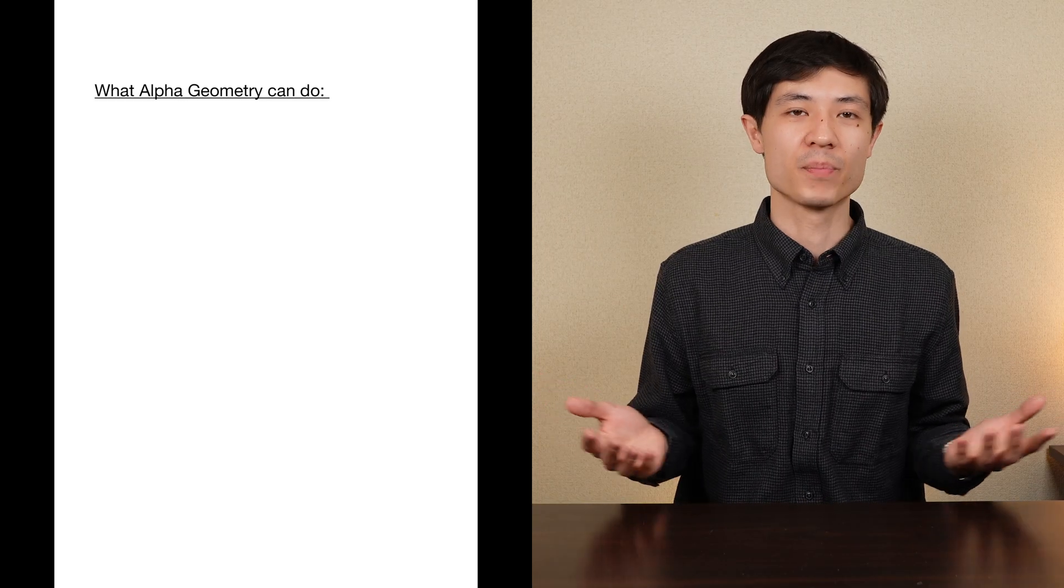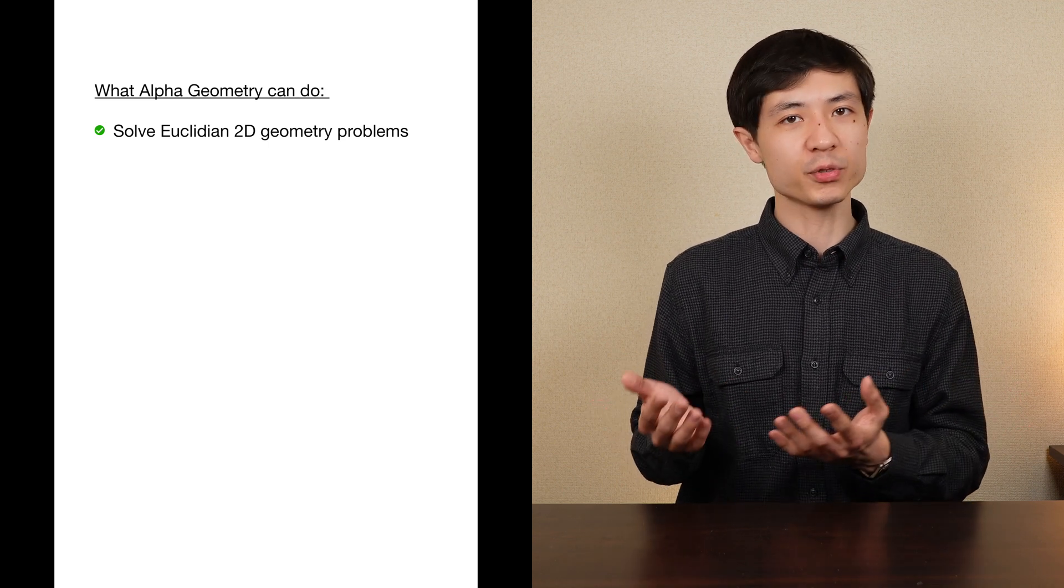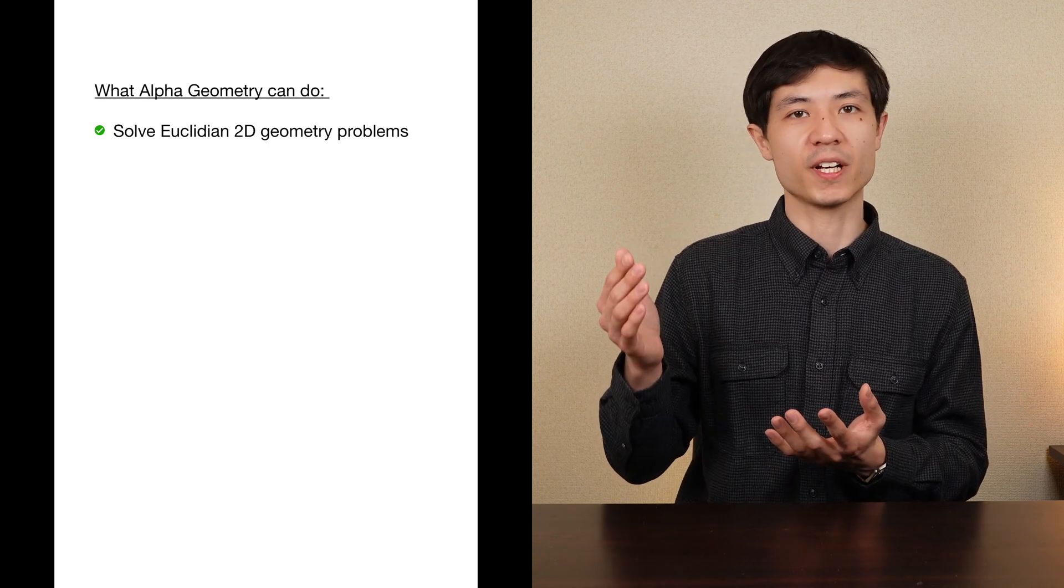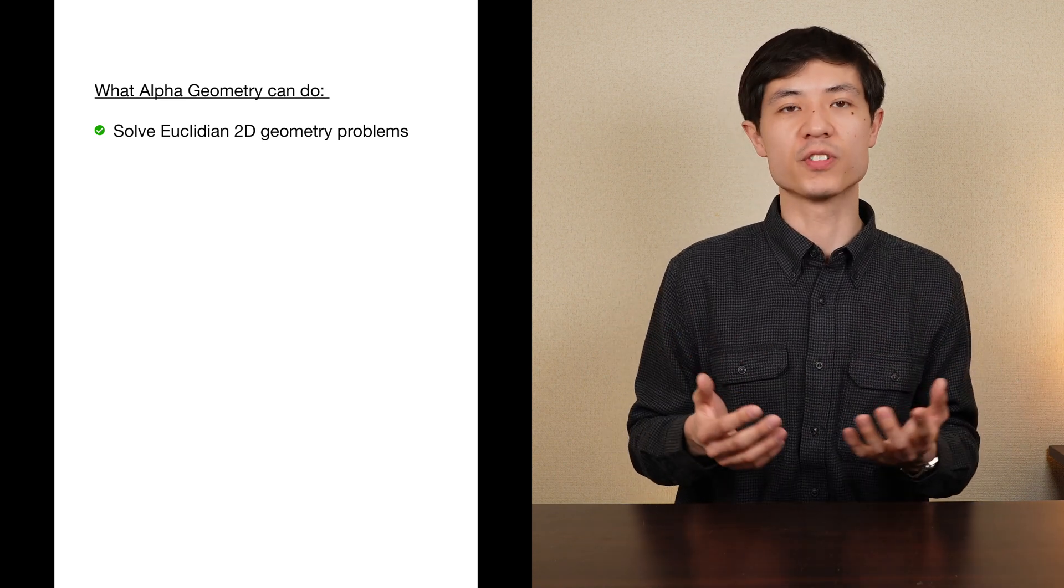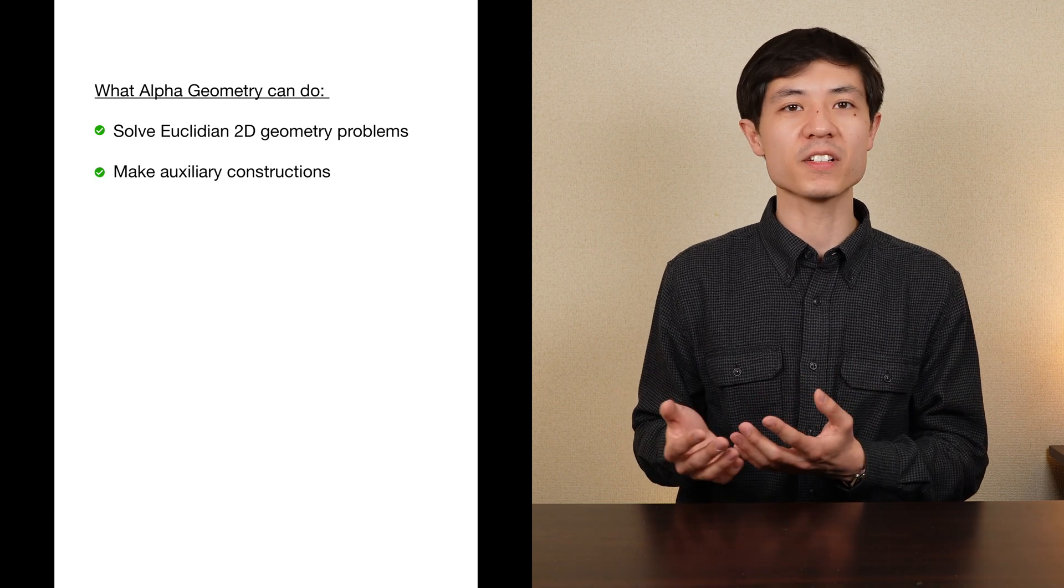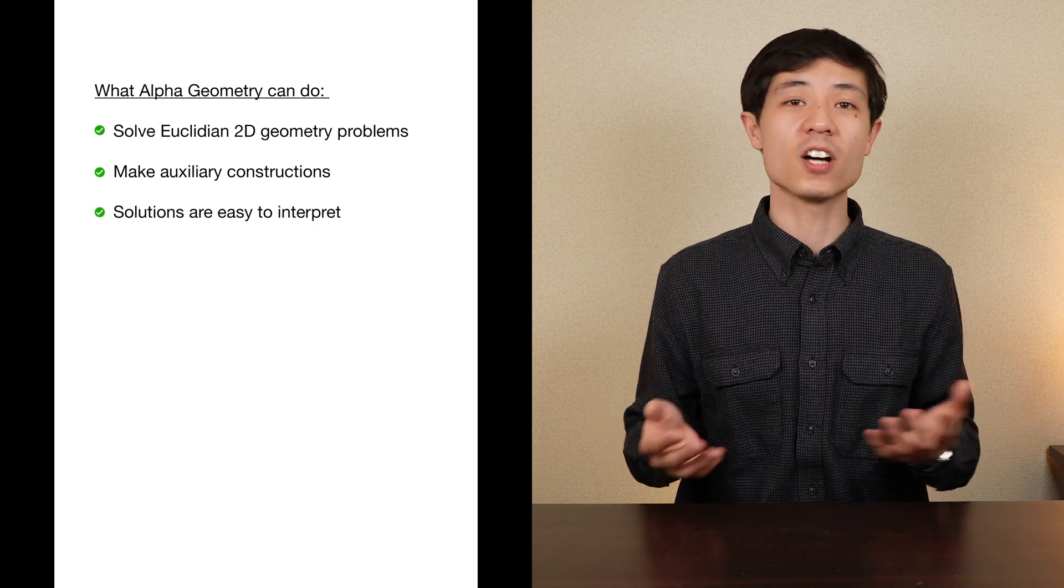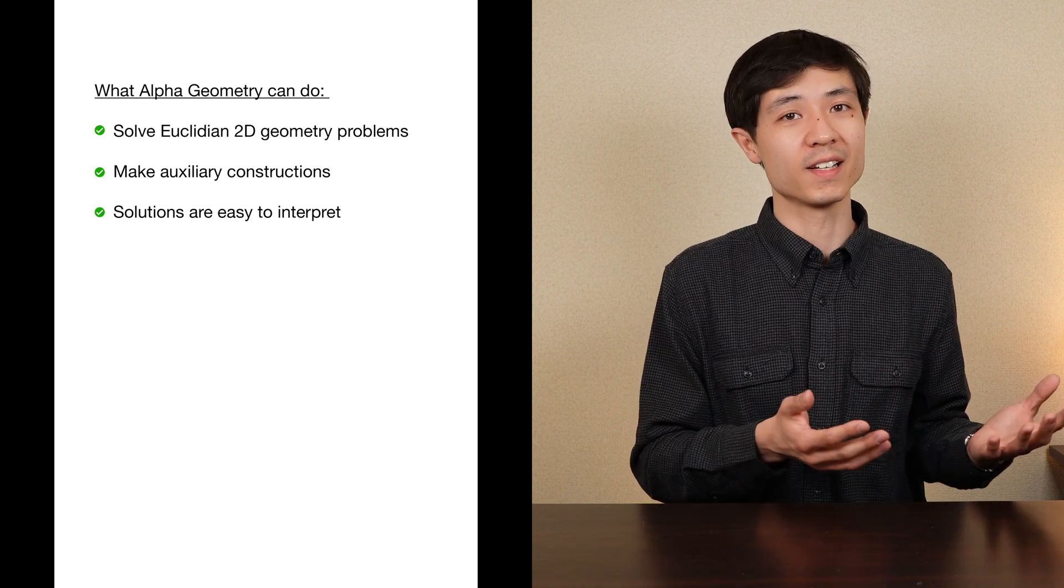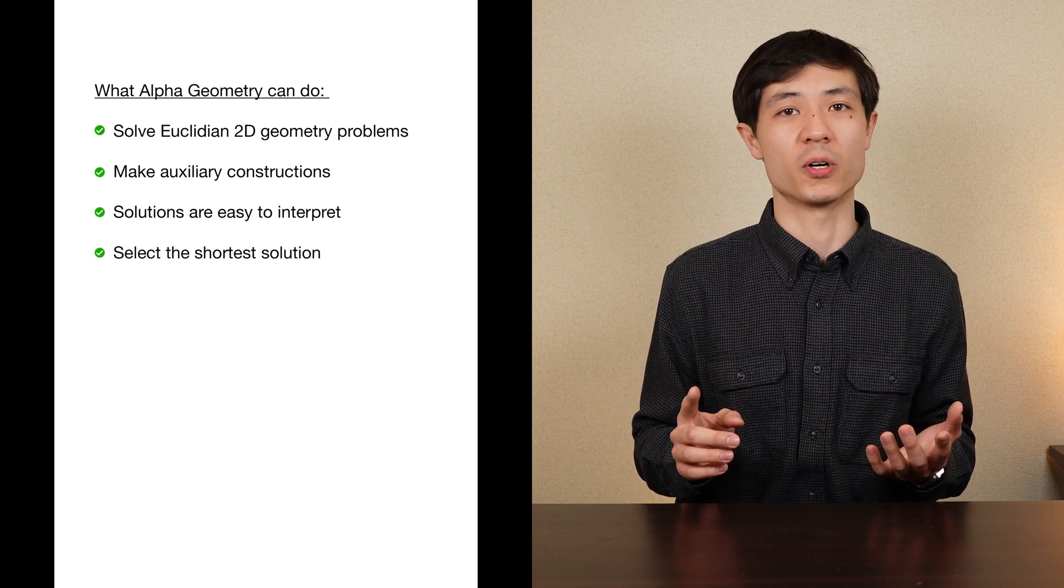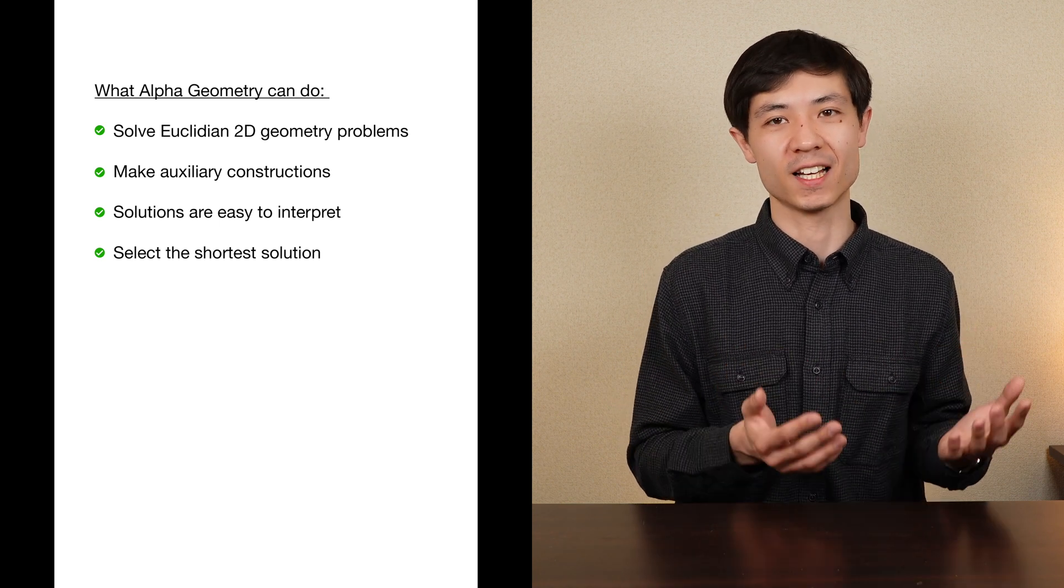So what can today's algorithm AlphaGeometry do? It's quite simple, it can solve pure Euclidean 2D geometry problems and prove results such as showing that two lines are parallel or show equalities between distance ratios. It can also solve difficult problems which require auxiliary constructions. Besides, the solutions it produces are easy to interpret in contrast to previous existing works. And finally when a geometry problem has several solutions it can select the shortest one among them which is a great advantage from the perspective of mathematical elegance and clarity.